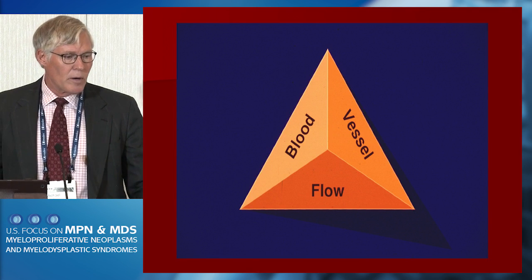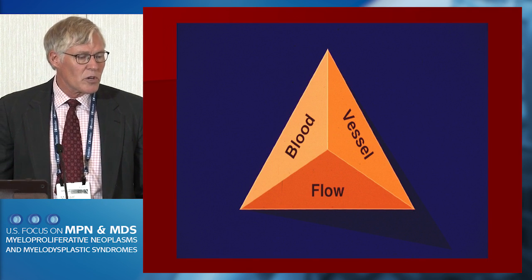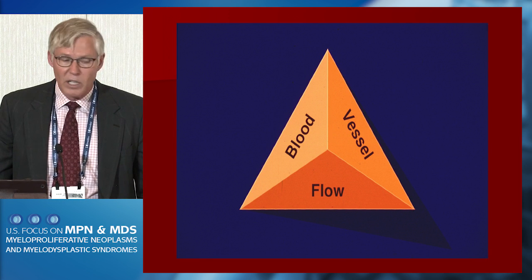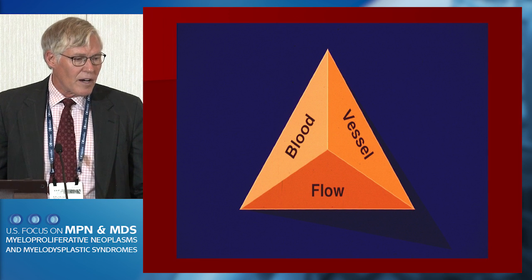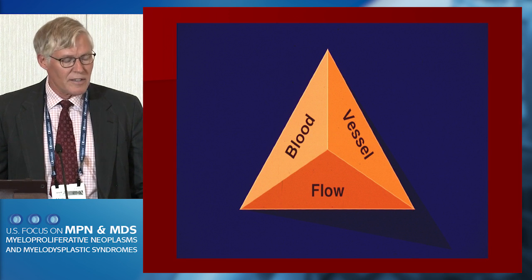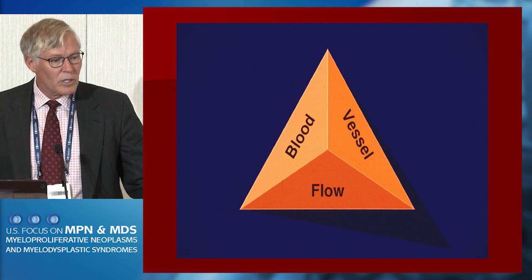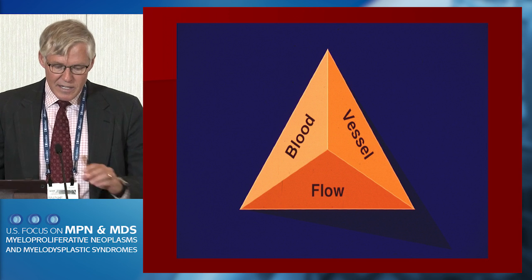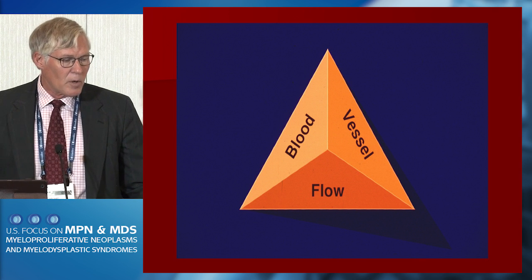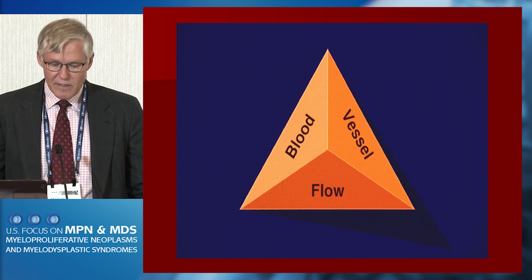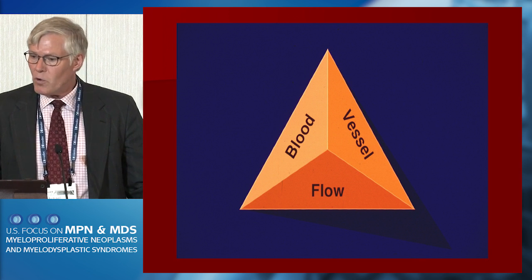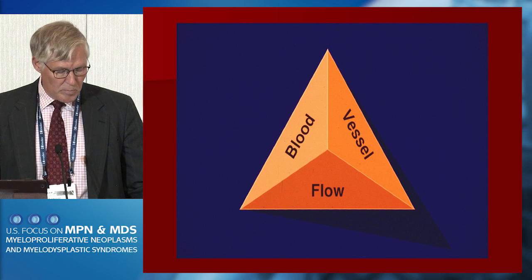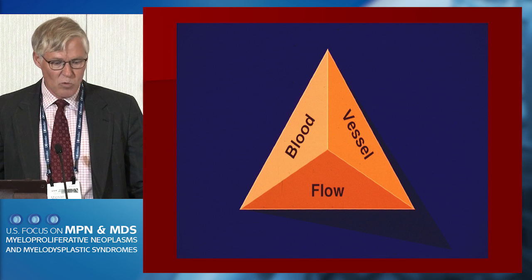Virchow proposed that thrombosis is a perturbation in the interaction between the blood — the various fluid elements, which may be soluble or cellular — the blood vessel, including the subendothelial components, and blood flow: not just simply the anatomy of the compartment, but the various rheological forces that are impinged on the things within the bloodstream.